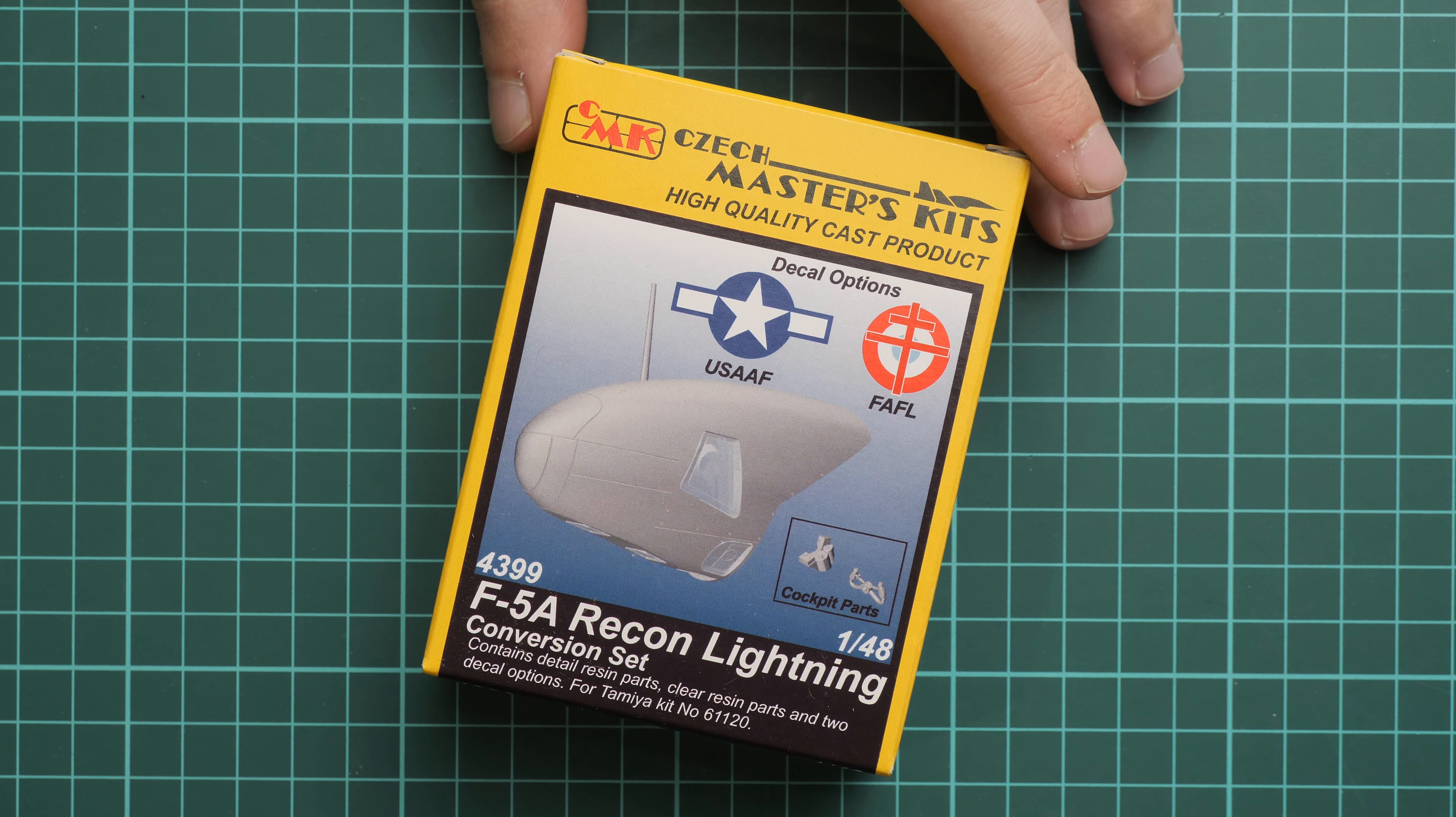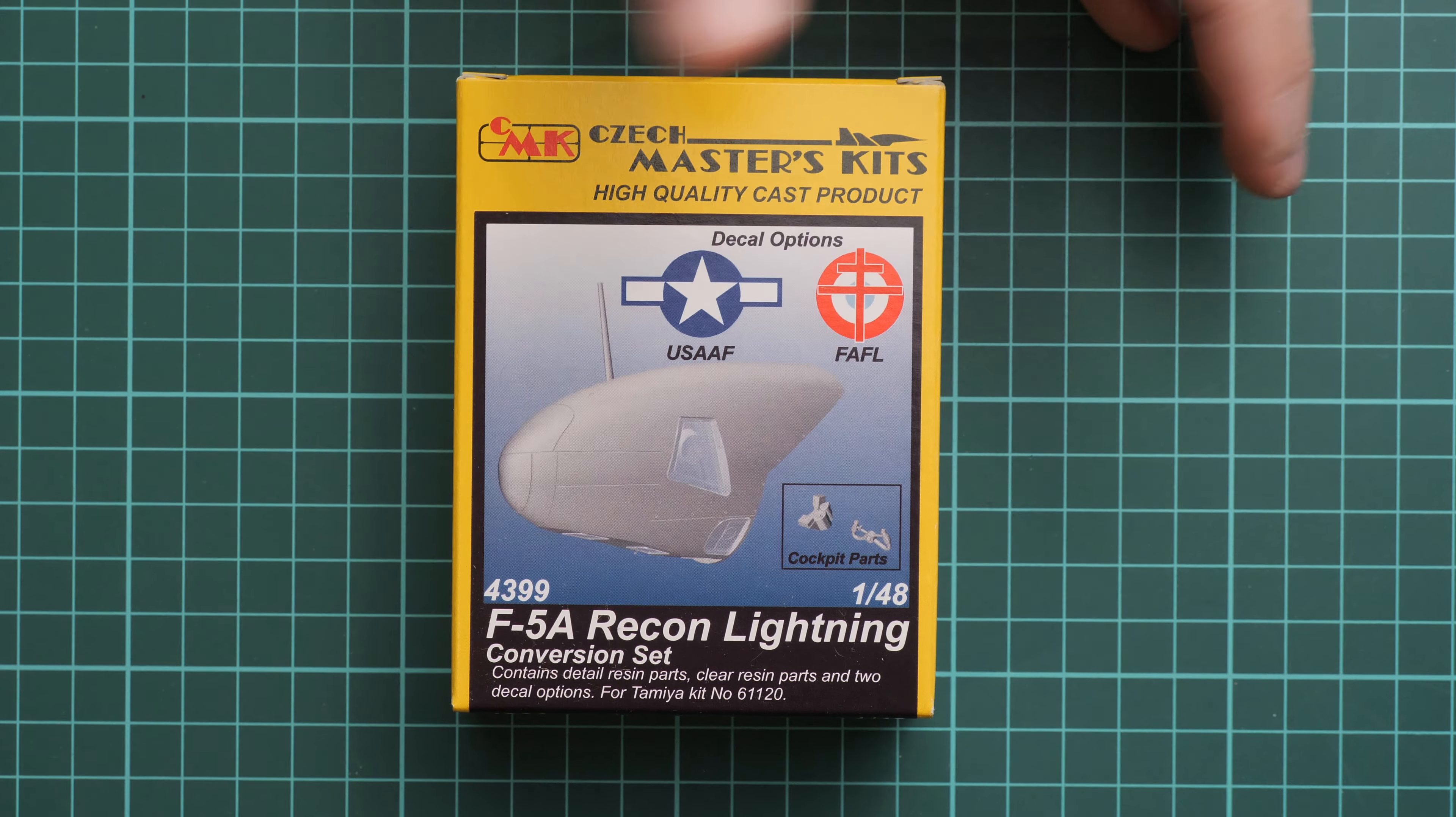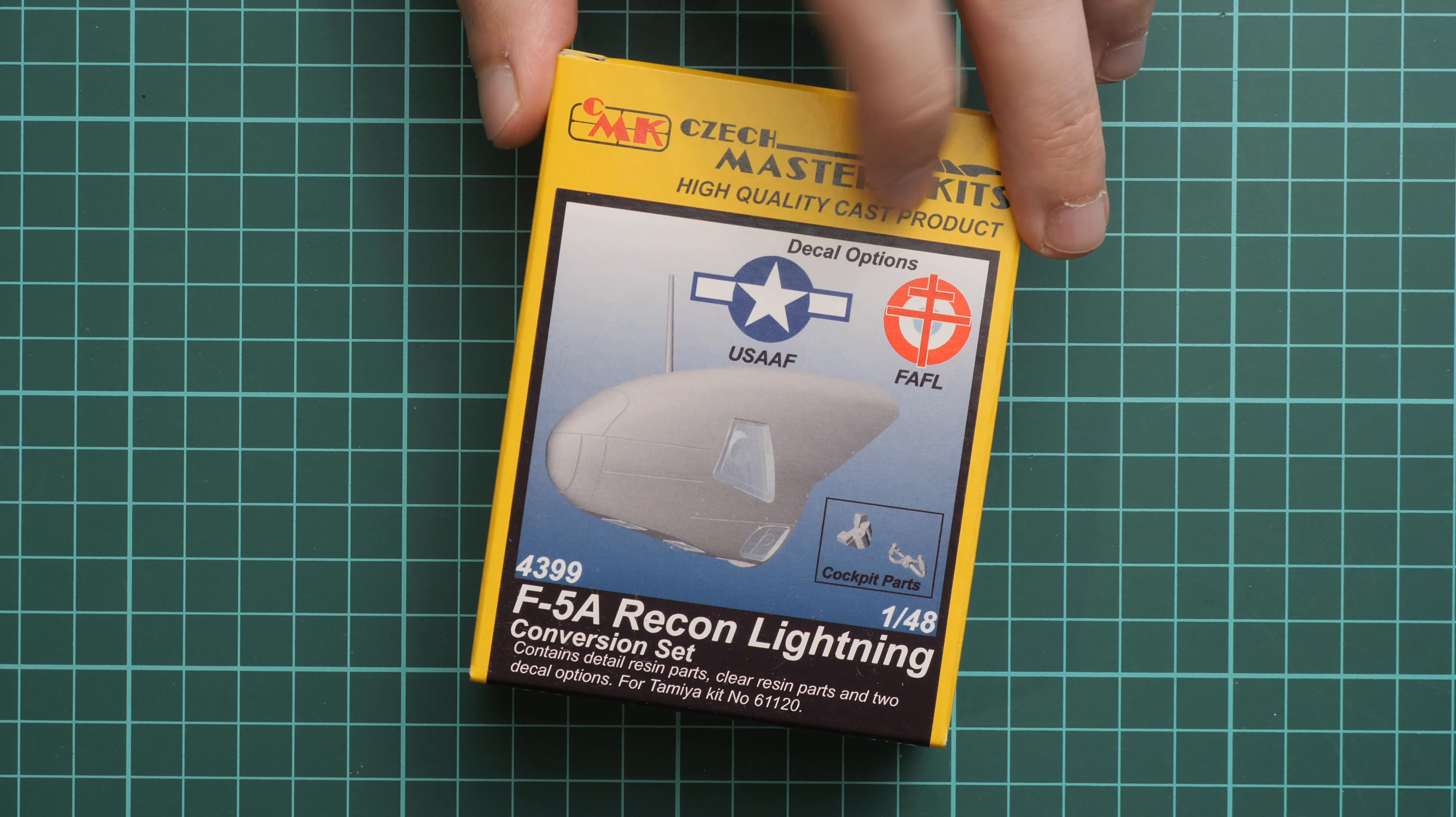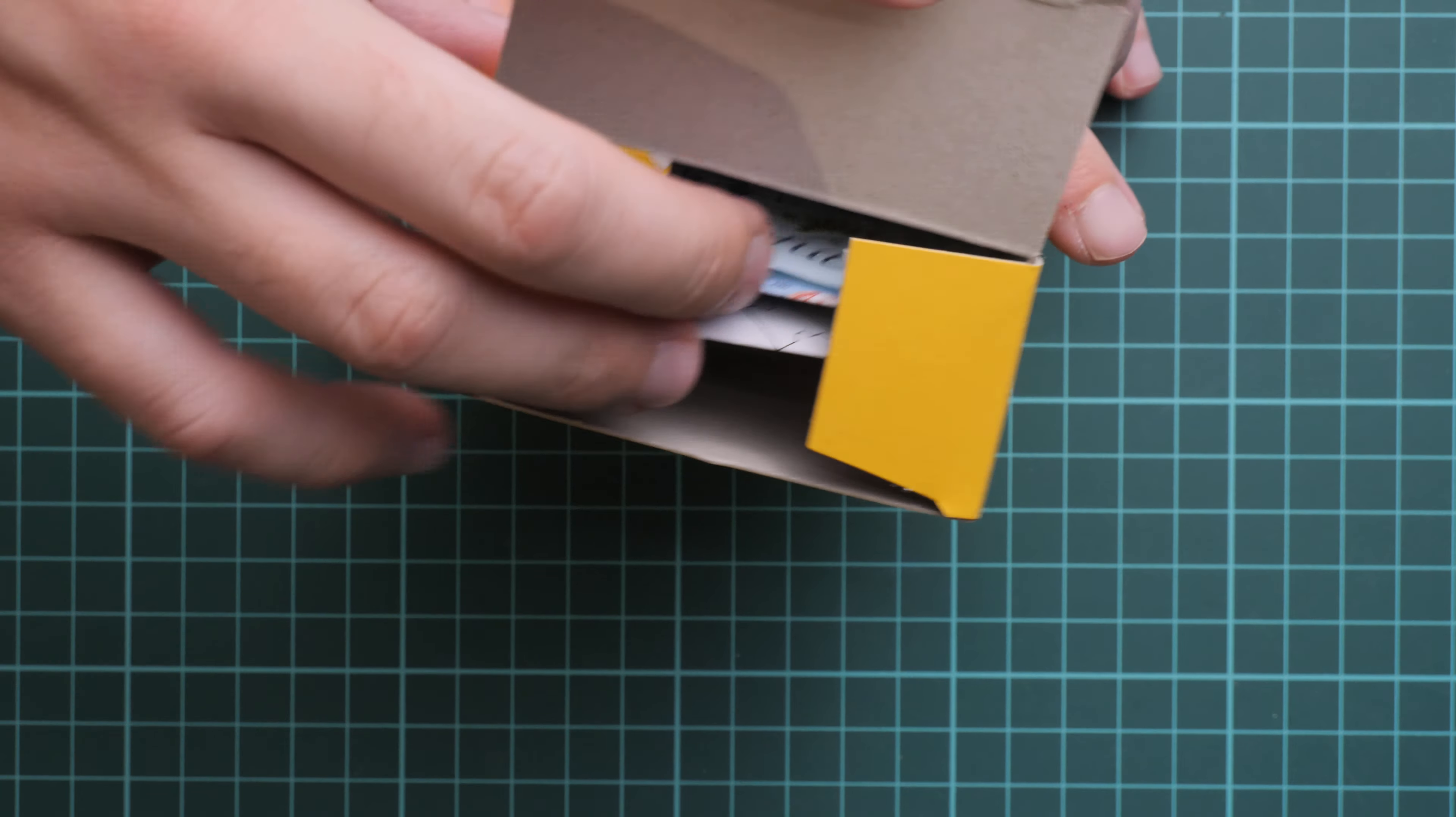We're going to open it together and check what's actually included inside. First of all, the packaging is typical. You can notice the small 3D image on the box art and the kit number is 4399. I'm mentioning it because there will also be another conversion set we'll check later. You can notice there are several marking options with decal options and some cockpit parts for the recon version.